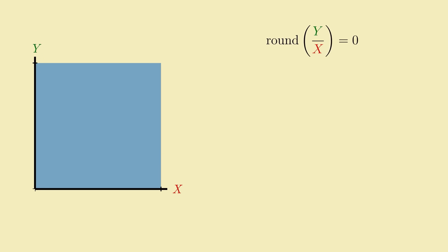Well, if a positive real number rounds to 0, it must mean that the number is less than 1 half, right? So this is equivalent to saying that y over x is less than 1 half.